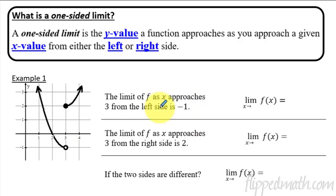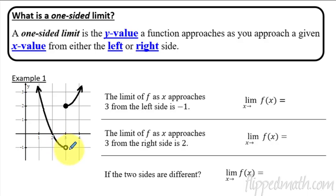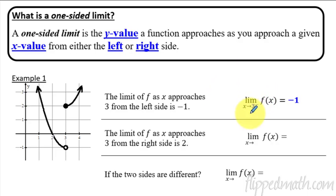In this first example, we have the limit of f as x approaches 3 from the left side. Looking at the graph, we approach x equals 3 from the left — going in that direction towards 3. If you stay on the graph and approach 3 from the left, the y value is negative 1. The way we write it with limit notation is: the limit as x approaches 3 from the minus side — that little minus exponent means from the left side — equals negative 1.